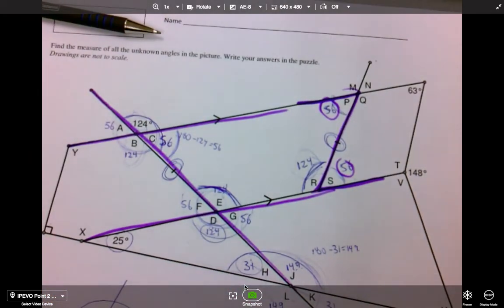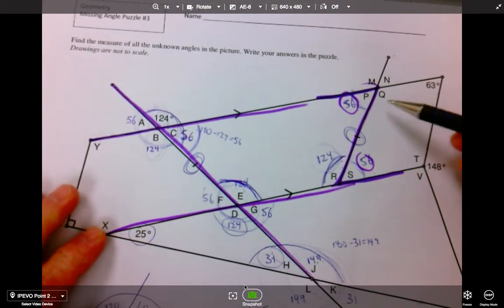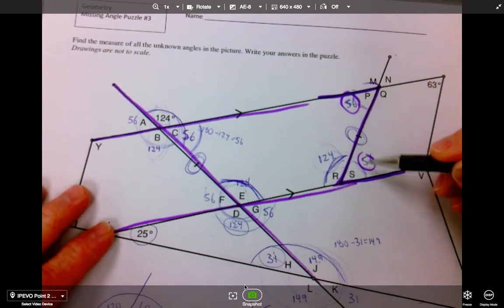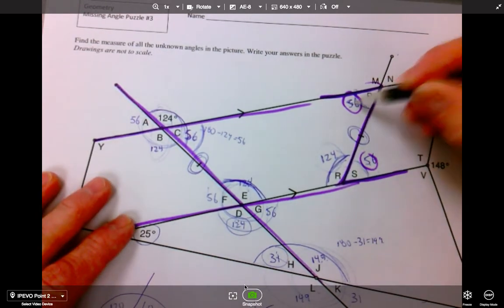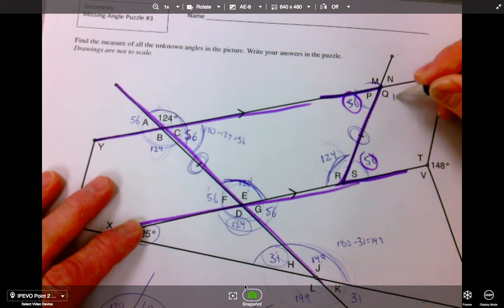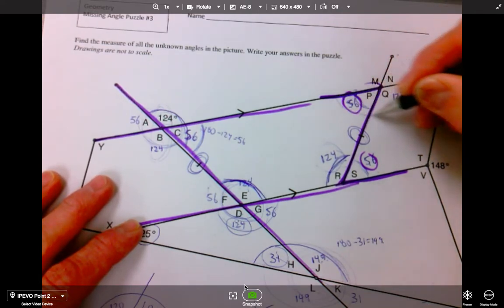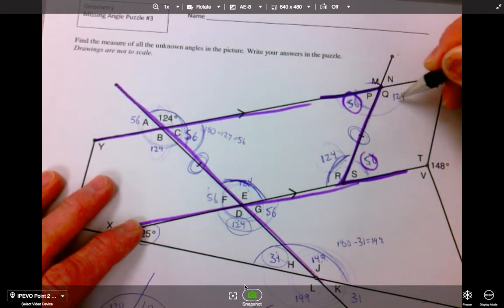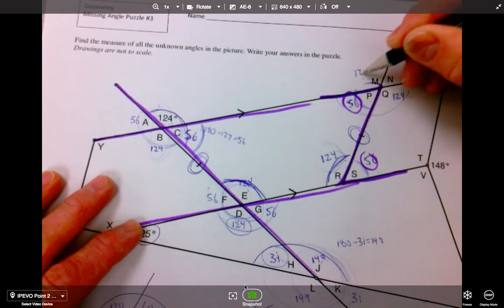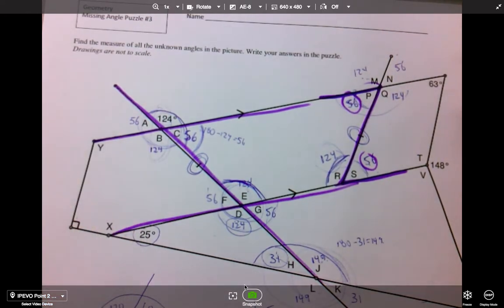Just doing a recording. So if this is 56, then, and this is 56, I know everything else. I know that I have 124 here because of the supplementary rule. I have the opposite is 124. I have this is 56. So it all starts coming together.